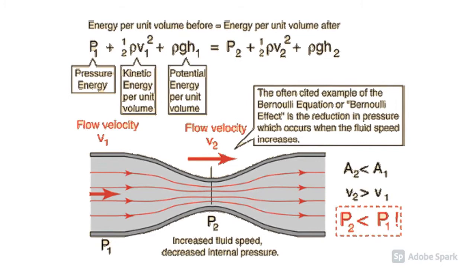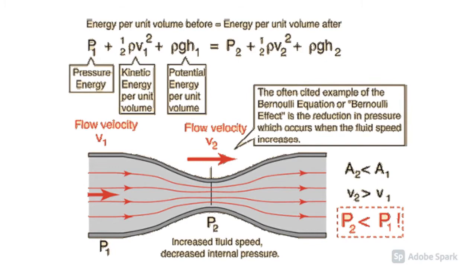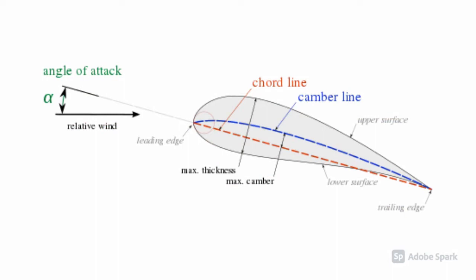Looking at an airplane's wings, specifically the airfoil, which is the cross-sectional area of the wing, can best explain how Bernoulli's principle is applied to flight.